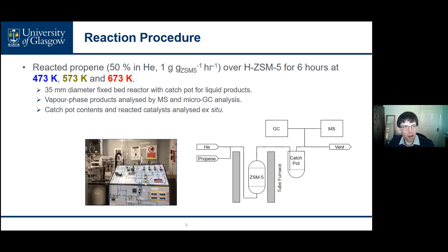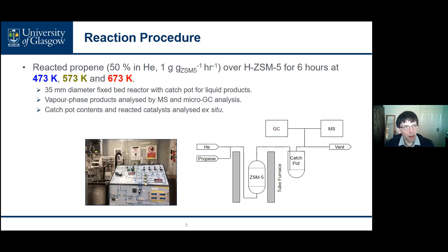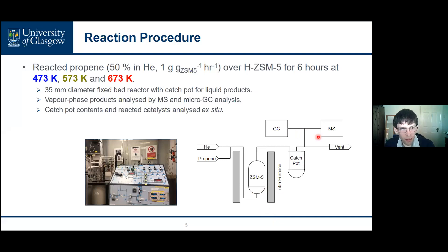One limitation is that INS is not suitable for use as an operando technique, so all INS investigations were done on catalysts after they had finished reaction. To prepare the samples, we reacted propene at three different temperatures — 473, 573 and 673 Kelvin — to examine three different reaction regimes around typical MTH conditions. The reactor was a fixed bed reactor made relatively short and fat to minimize bed length effects. Vapor phase products were analyzed by GC and micro-GC, while the contents of the catch pot and reactive catalysts were analyzed ex situ.